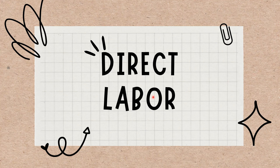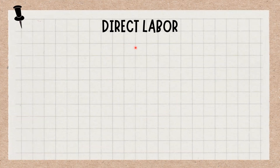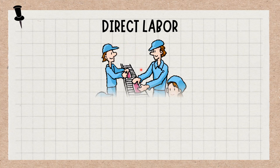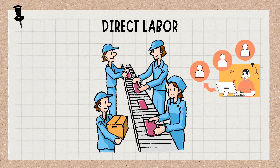Direct labor refers to the salaries and wages paid to workers directly involved in the manufacture of a specific product or in performing a service. The work performed must be related to the specific task. For a business that provides services to its customers, direct labor is the work performed by the workers who provide the service directly to the customers.